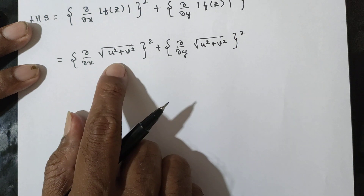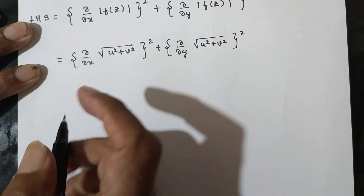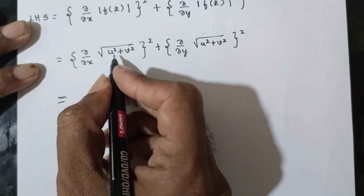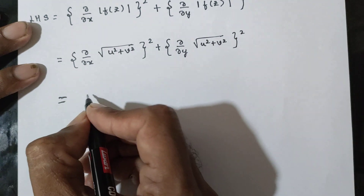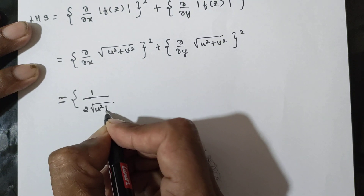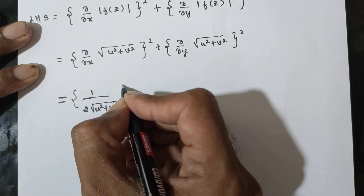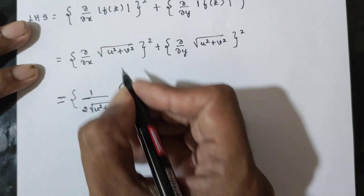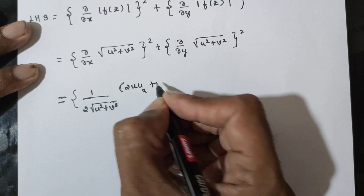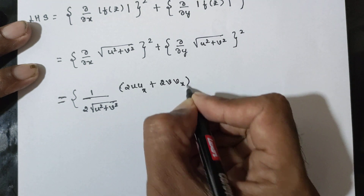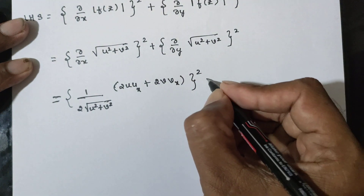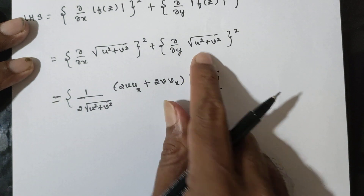Here, the derivative of root x is 1 by 2 root x. So we have 1 by 2 root of u square plus v square. That's why u square will differentiate to give 2u times ux, and we get 2u ux plus 2v vx, whole square. Same with respect to y.